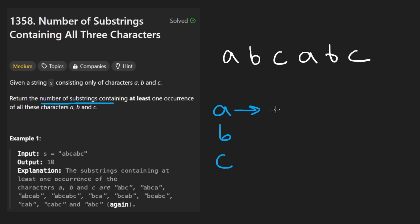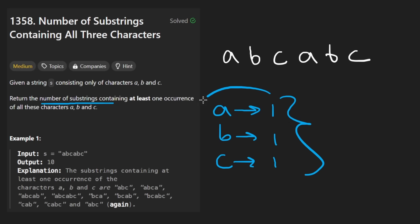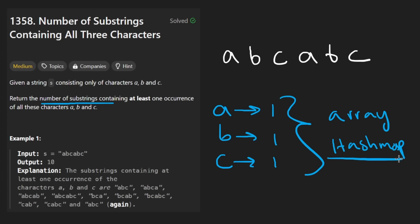So you could think of it like this: each character needs at least one occurrence. Already if you're thinking about the problem logically, it seems like having some way to count the occurrences of each character makes sense. We could do that with an array, or you could just stick with a hash map, which is what I'm going to do because it makes things a little bit easier.